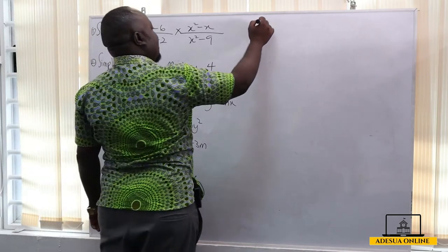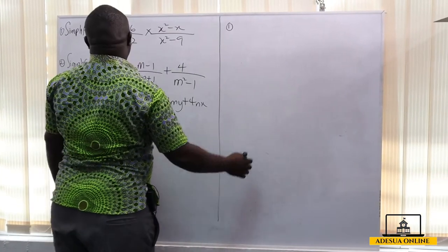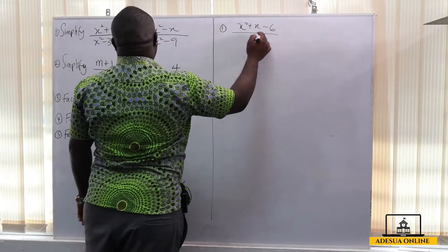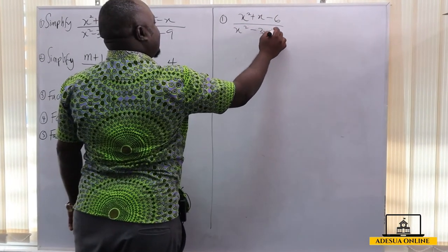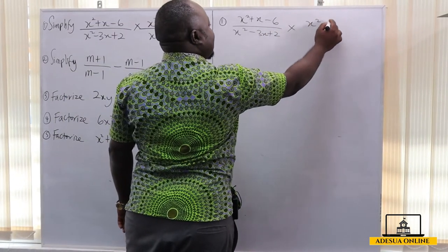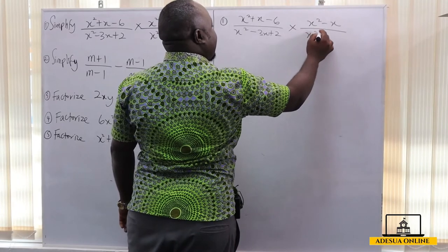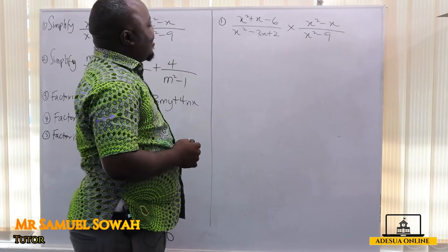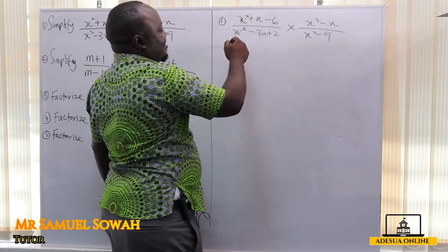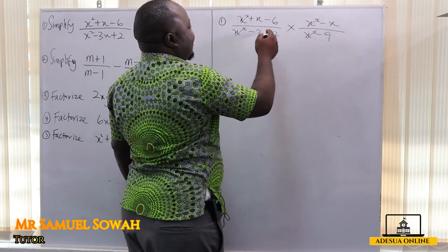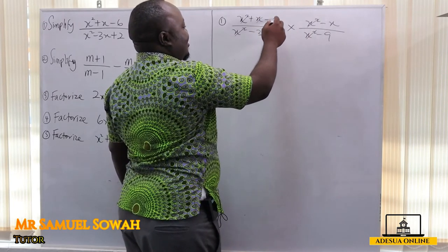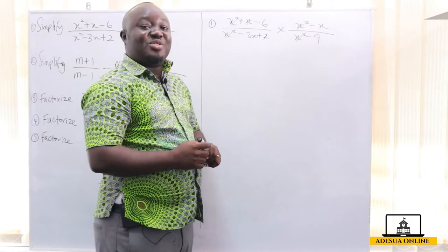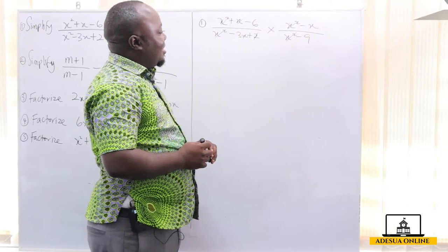Let's start with number 1. In number 1, we have been asked to simplify (x² + x - 6)/(x² - 3x + 2) multiplied by (x² - x)/(x² - 9). I have seen students cancel out — x² will cancel x², this x will cancel this x. Why do you do that? You are disgracing mathematics. So we don't do that at all. Let me show you how we go about this.